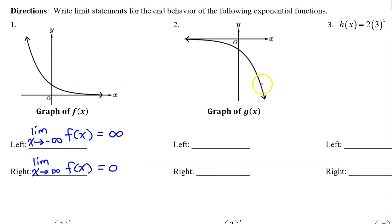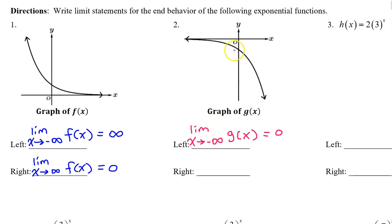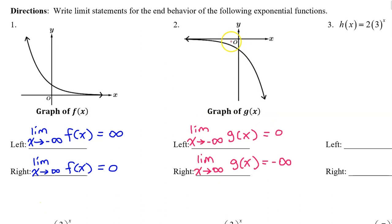In number two, as we head towards the left, the function is approaching the x-axis. So the limit as x approaches negative infinity is zero. On the right, g of x is falling. So the limit as x approaches positive infinity is negative infinity.